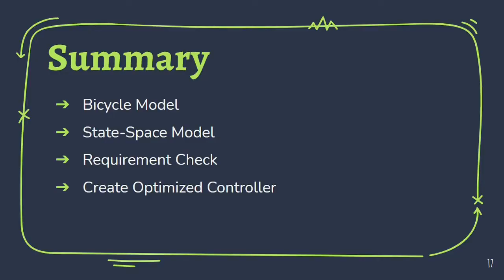To summarize, we first took our bicycle model, did some physics, and represented it in state-space form. Then, we checked for requirements for the controller design. The model passed everything except observability, so using minimal realization, we could finally design a controller. We checked the output angular acceleration to check for the stability of the open loop, closed loop, and reference tracking model. We then made an optimized controller that had only one alteration to the original Q matrix.